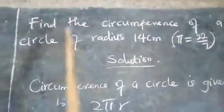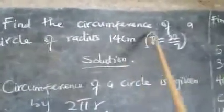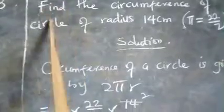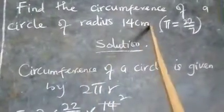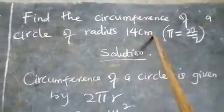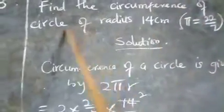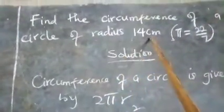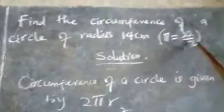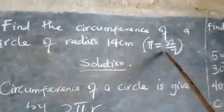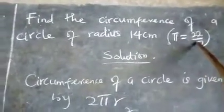Find the circumference of a circle of radius 14 cm. We have to find the circumference of a circle of radius 14 cm. That is the question. Now they gave us this as a hint. They said pi is equal to 22 over 7.